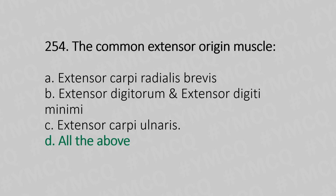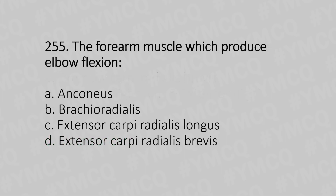Question 255: The forearm muscle which produces elbow flexion is — Option A: anconeus. Option B: brachioradialis. Option C: extensor carpi radialis longus. Option D: extensor carpi radialis brevis. The answer is Option B, brachioradialis.